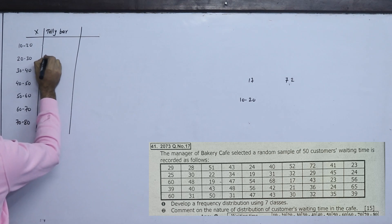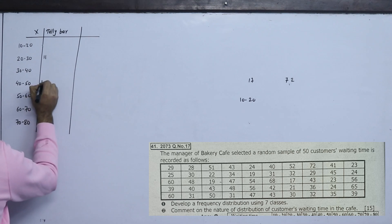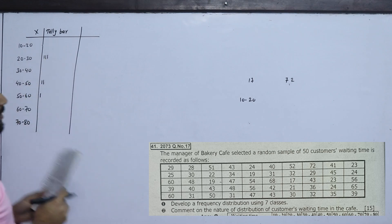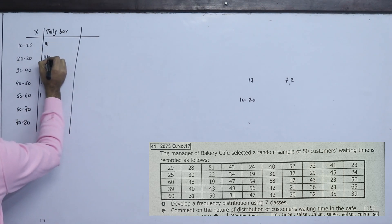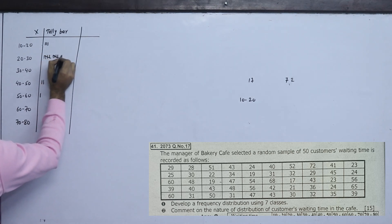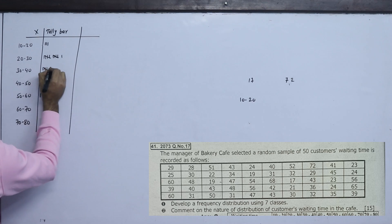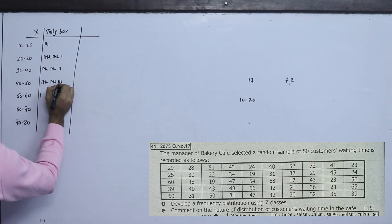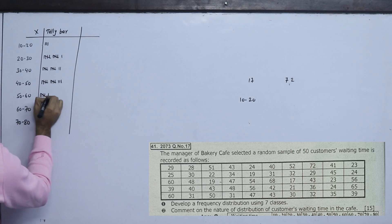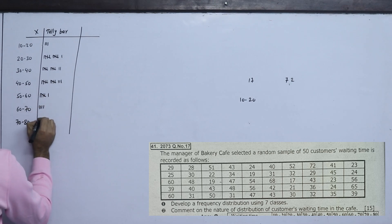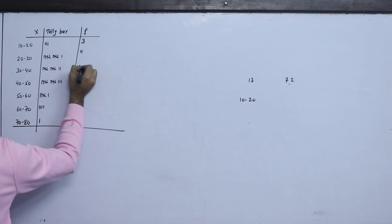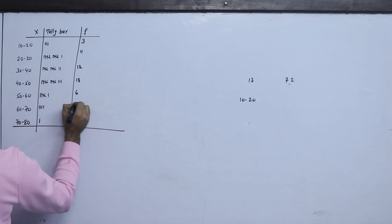In each unit: 8, 8, 8, 1, 1, 1, 2, 1, 1, 5. Then: 1, 2, 3, 1, 5, 5, 5, 5, 5. Then: 12, 13, 13, 13, 16, 13, 14, 17. Now the frequency is: 3, 11, 12, 13, 6, 4, 1.